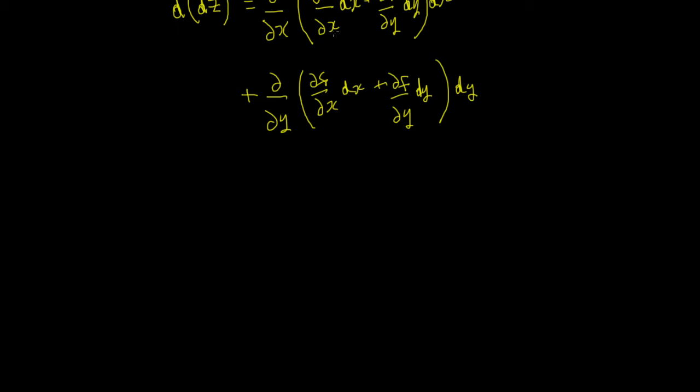Now, that is a multiplication of two functions. One function is partial F or partial X, the other one is DX, so we can use the product rule for differentiation. So that one term there will create two terms, that one term there will create two terms, and the same with that one. So we're then going to end up with two, four, six, eight terms.